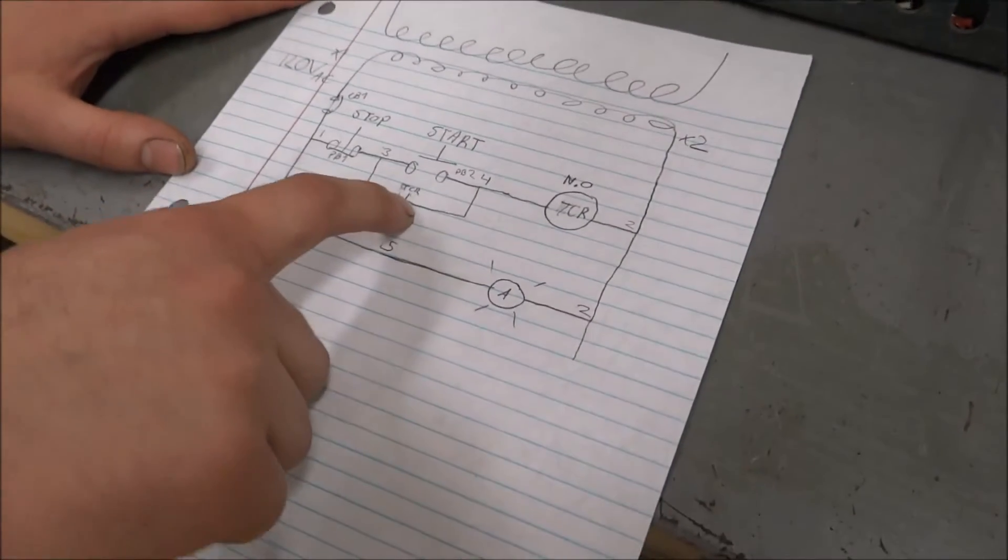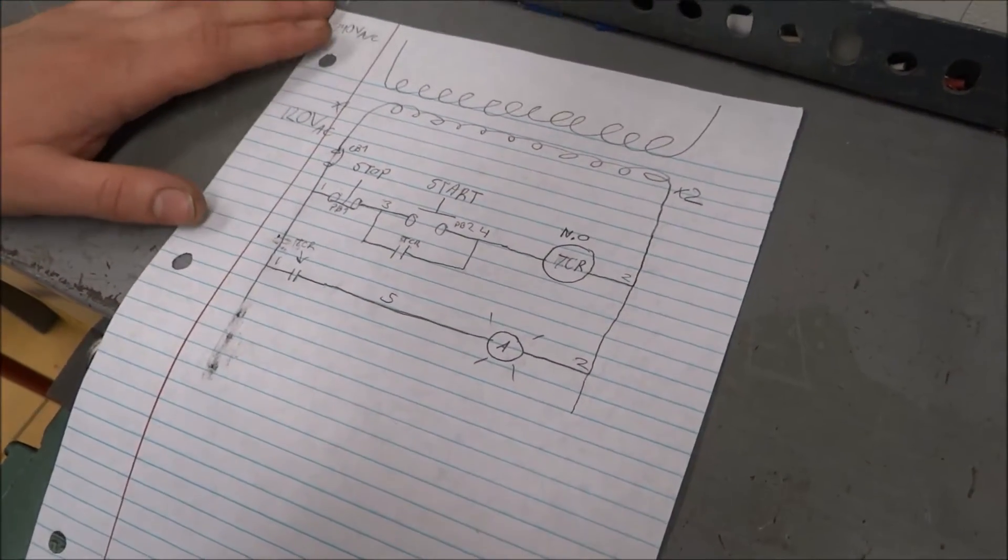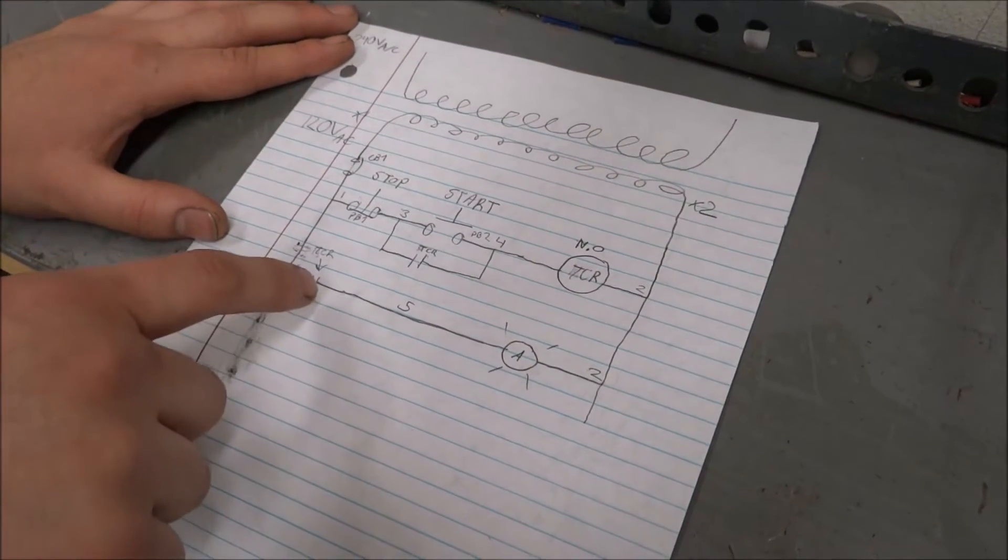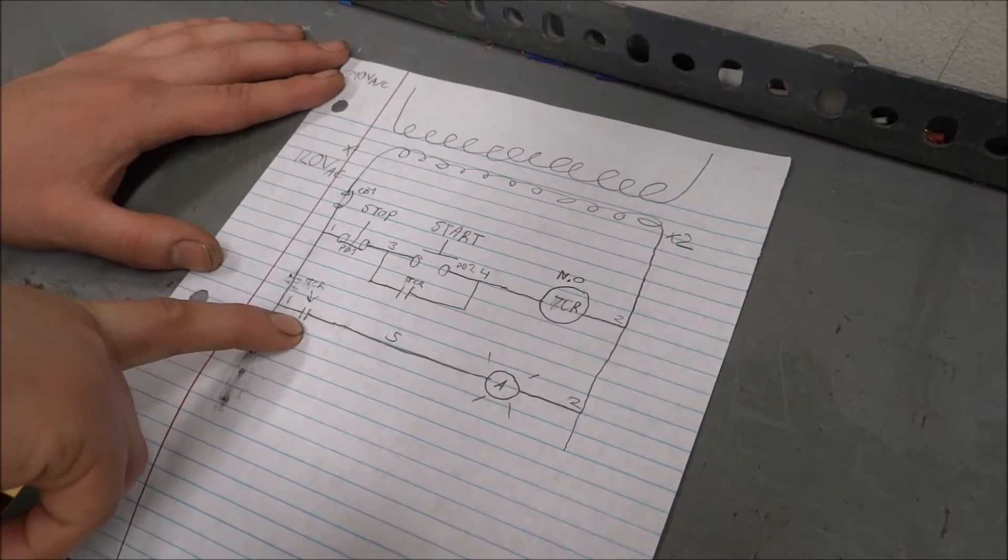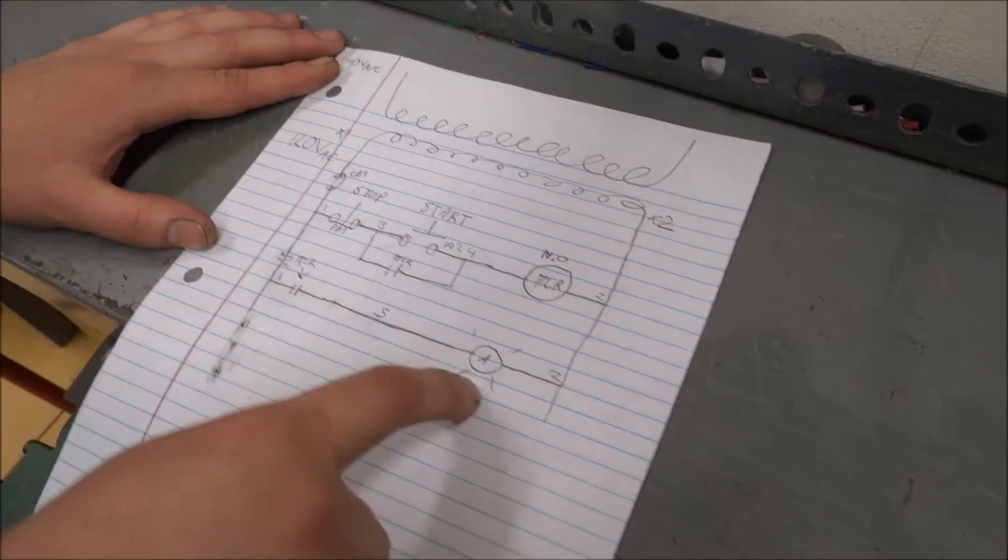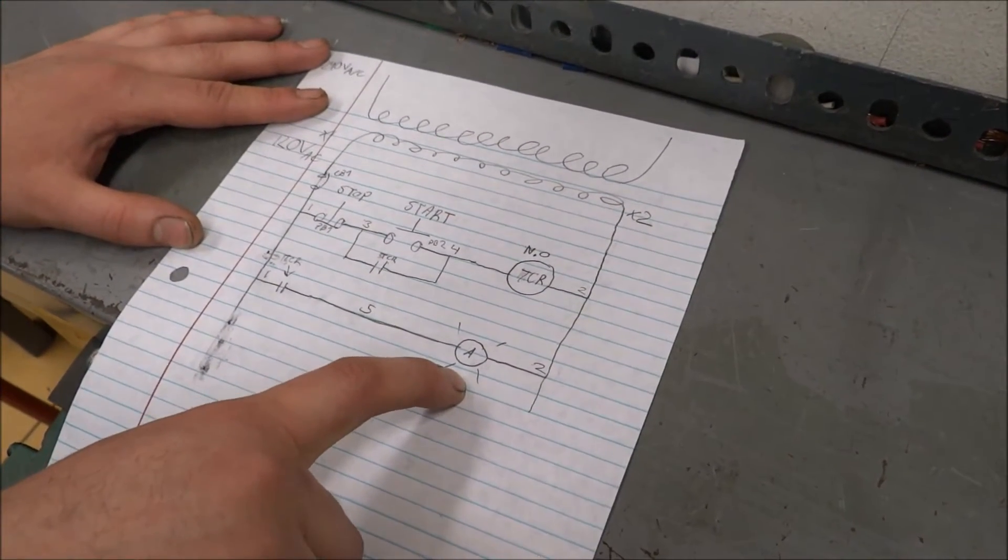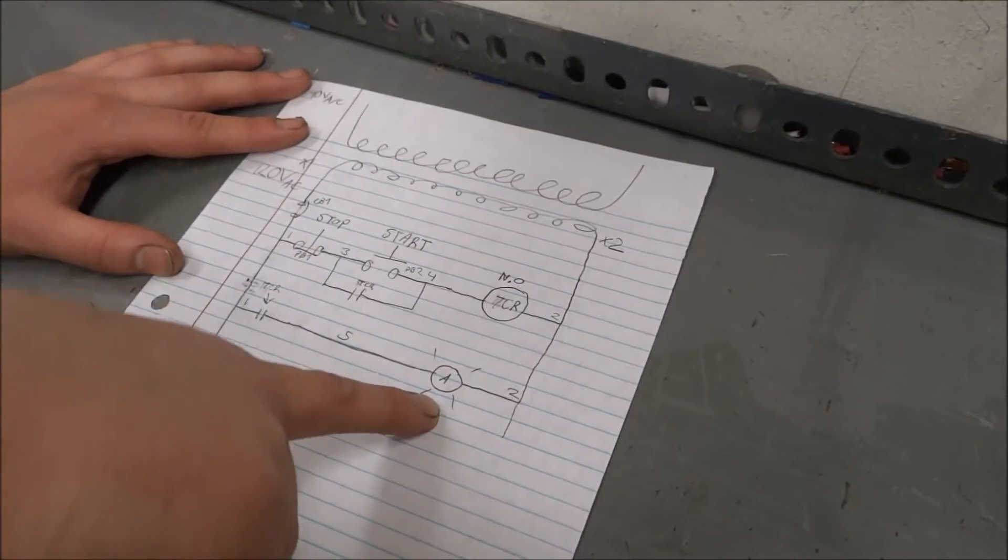And right here in line 3, we have our memory for the start button. Then it comes down into a contact relay, which heads to the light and turns the light on. And then after 5 seconds, the light turns off.